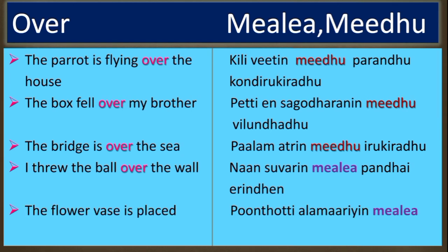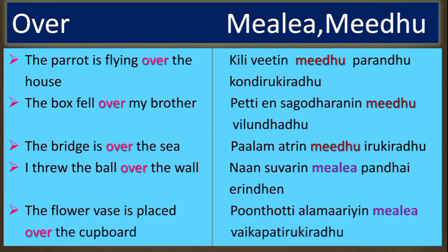The last example is: 'The flower vase is placed over the cupboard.' In Tamil: Pundutti alamari yin meele vaiikkapattirikki radu. Pundutti means the flower vase, alamari yin meele means 'over the cupboard', and vaiikkapattirikki radu means 'is placed'. So friends, I have taught you three prepositions and their usage in Tamil. If you have any doubts, please comment in the comment section below or mail me. Thank you friends!